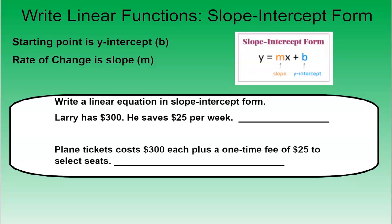The starting point of a linear function is always your y-intercept, which is your b. And the rate of change is going to be your slope, which is your m. So we're going to take a look at a couple examples here, and we're going to write linear equations in slope-intercept form.